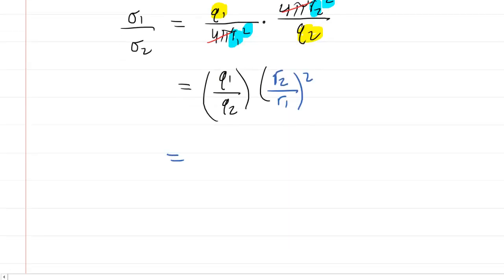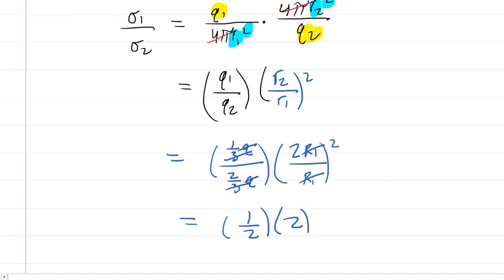We developed some answers to these earlier. We know Q1 was one third Q, Q2 was two thirds Q, r two was two times r one, and r one was just r one. These r ones cancel out, the Q's cancel out, so now you have one third divided by two thirds. These threes cancel out, so you really have one over two times two squared, which is one half times four, which is two. So this would be the correct answer to part D.